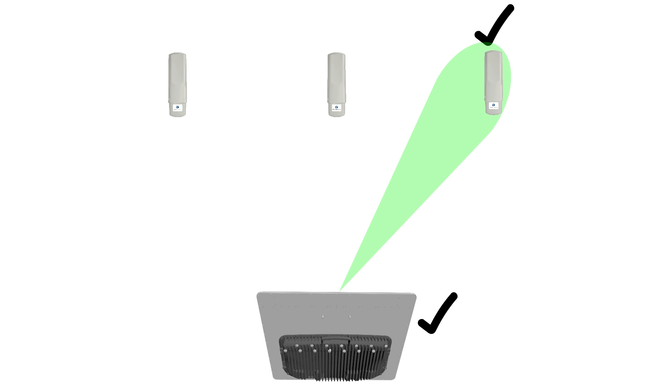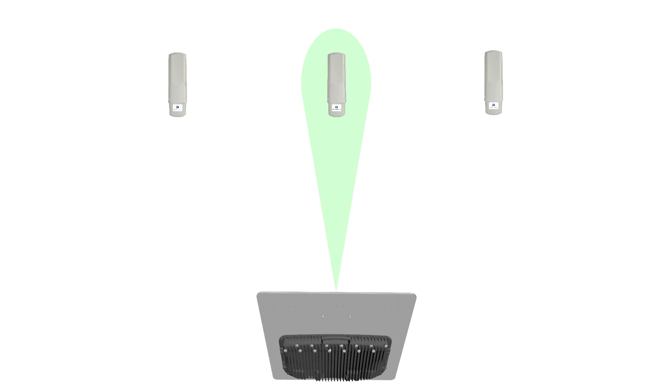Downlink beam forming solves another issue with conventional systems. When the signal energy from the access point antenna is spread over a wide angle, the total signal energy the antenna is able to generate is spread over that angle. However, when the access point antenna is transmitting to one subscriber, it would be beneficial to focus that signal energy into a narrower beam to provide a higher signal level to the subscriber.